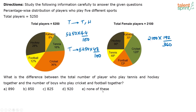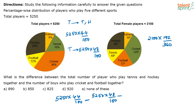To find the number of boys who play cricket and football, and the total number of people who play tennis and hockey — what should we do? You have to do 5250 into 44 by 100, minus 5250 into 48 by 100, minus the number of girls. That is: total people who play cricket and football minus the number of girls who play cricket and football. Once you know this logic, you can write it in a few steps directly.